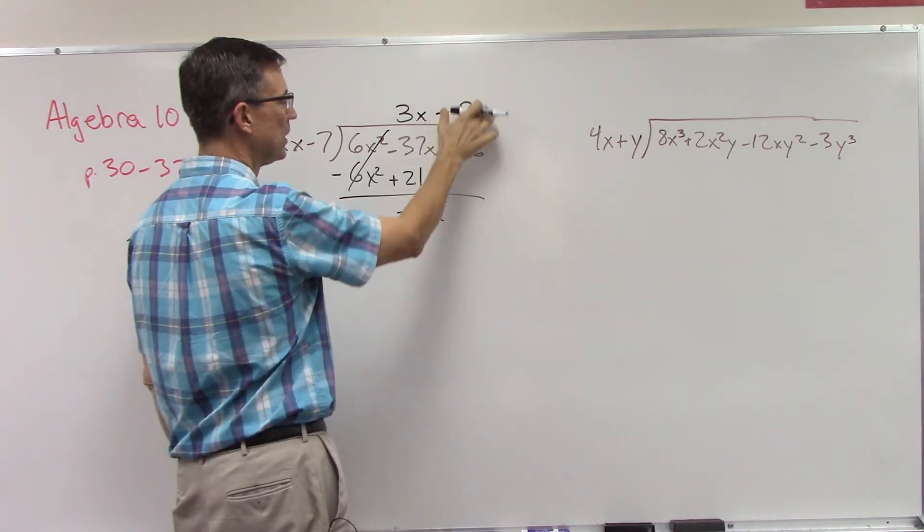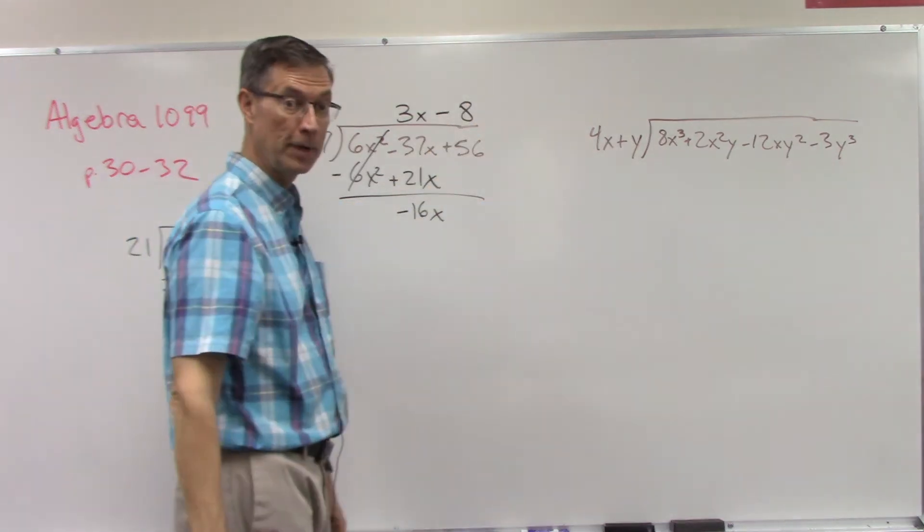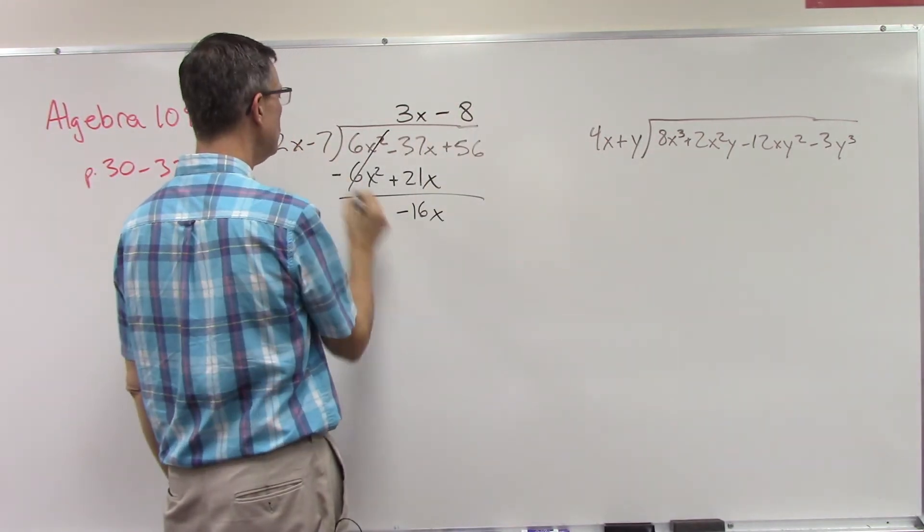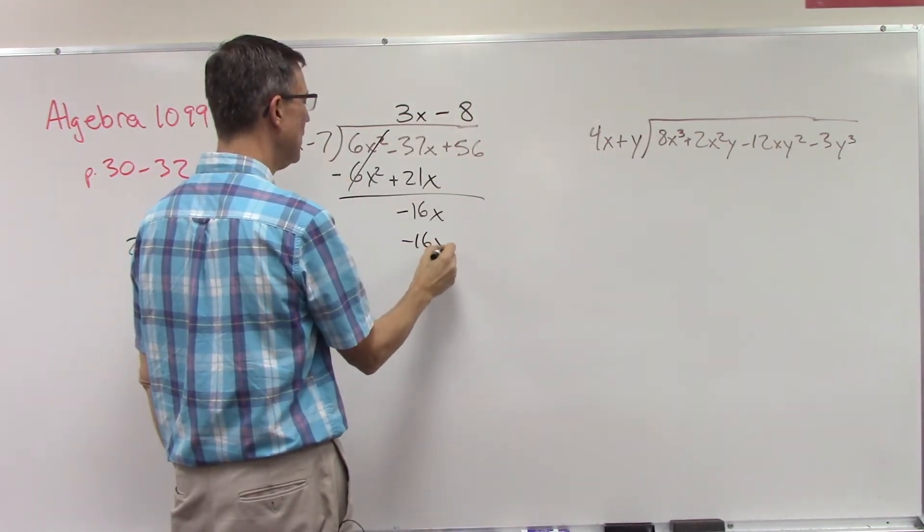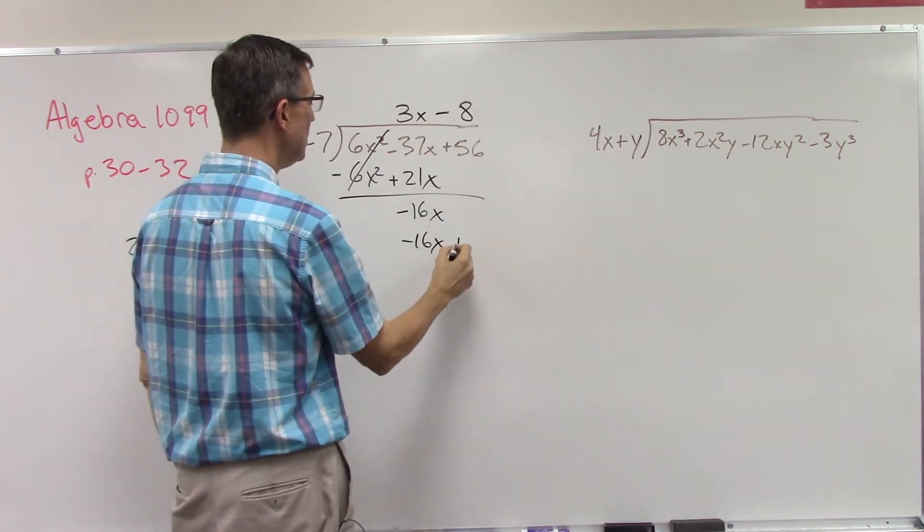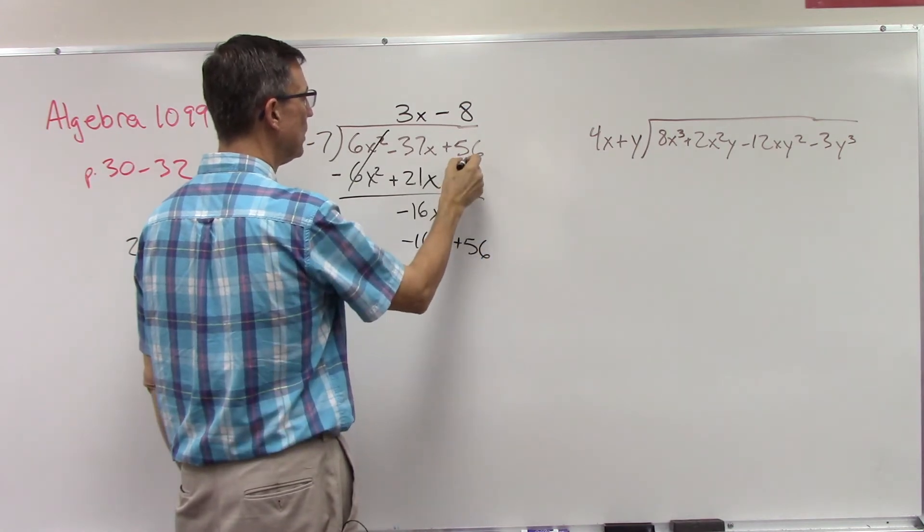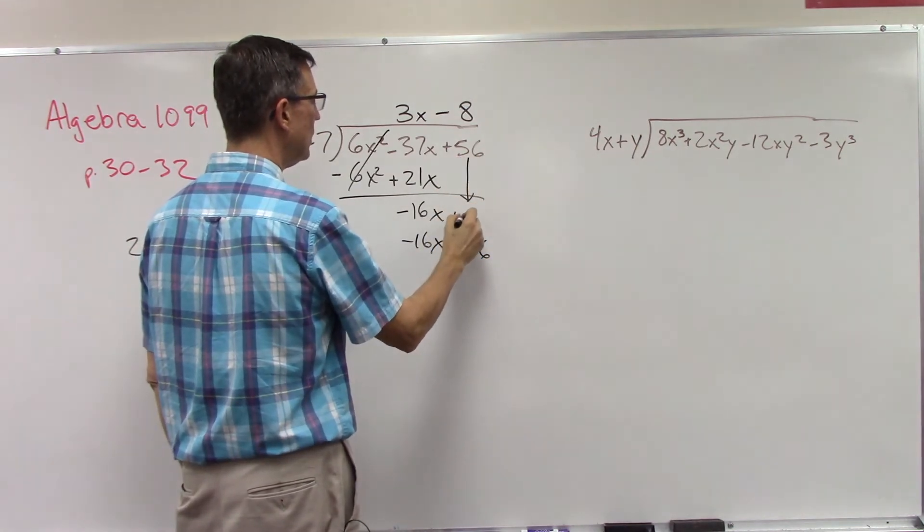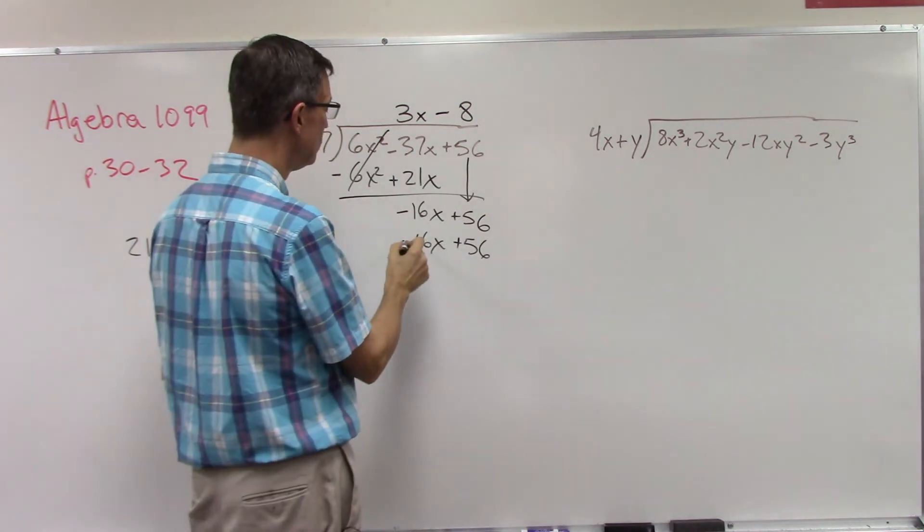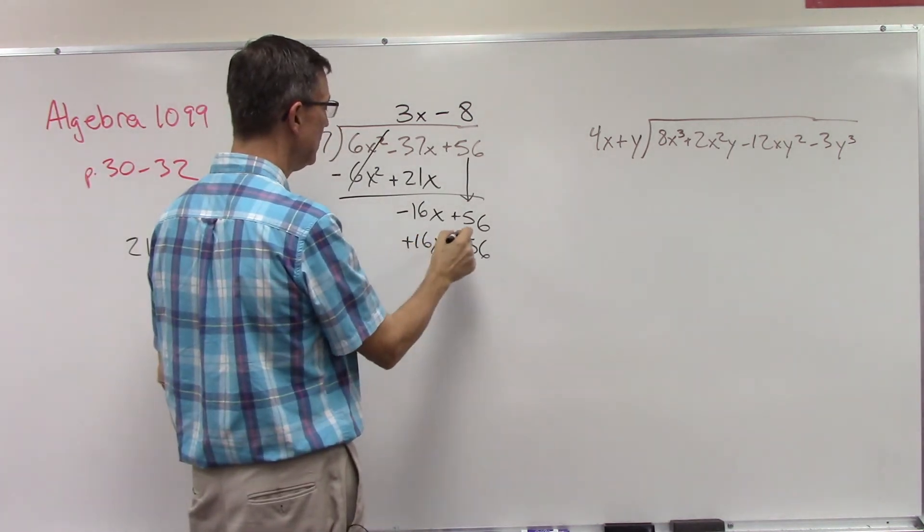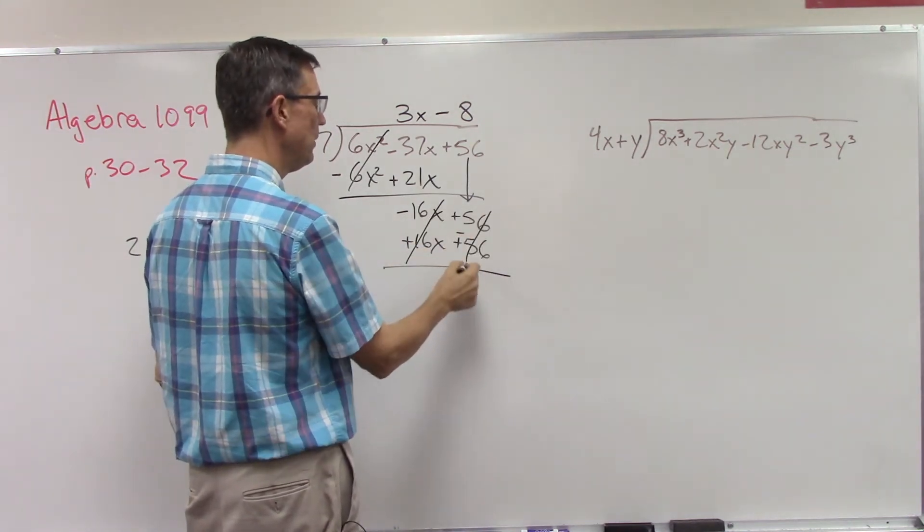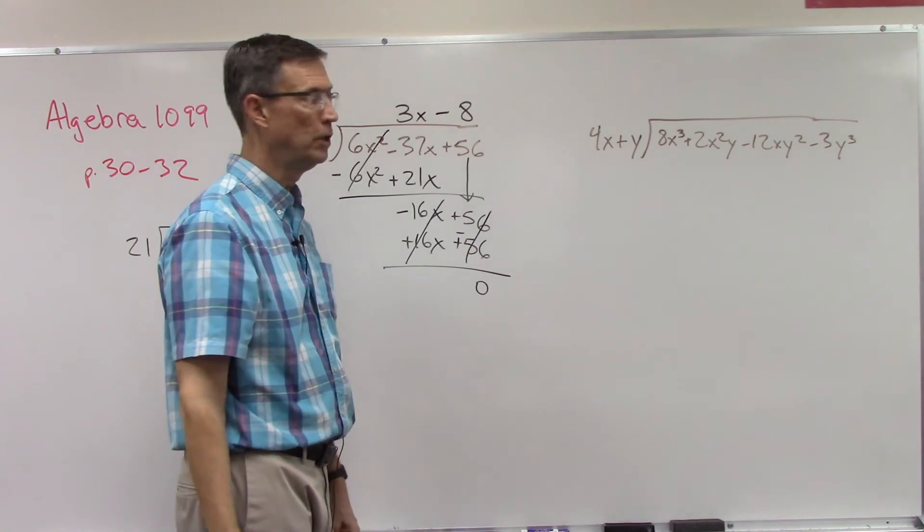Now I'm going to take negative 8 times 2x and get negative 16x. Negative 8 times negative 7 is positive 56. Oh, by the way I got to bring this down. Now we change both of these to their opposites and add. That cancels out and yay, that one cancels out so we had a remainder of zero.